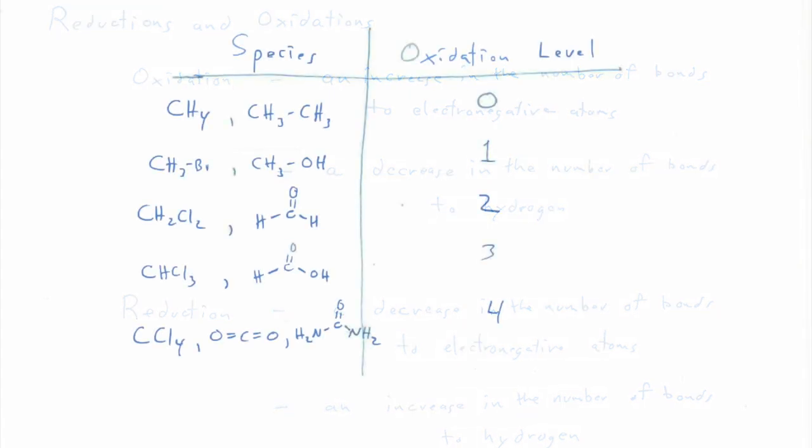We can talk about different oxidation levels or redox levels in the field of organic chemistry. Don't confuse this with true oxidation states — there is a way to determine oxidation states for carbon atoms in molecules, but it's overly tedious and not that useful for organic chemistry at the synthetic level. Since oxidation and reduction is all about how many bonds to electronegative atoms a carbon has, there are going to be five oxidation levels — zero through four bonds to an electronegative atom.